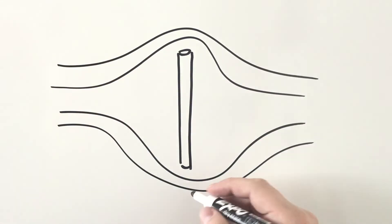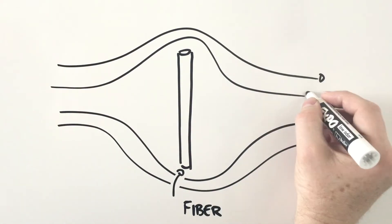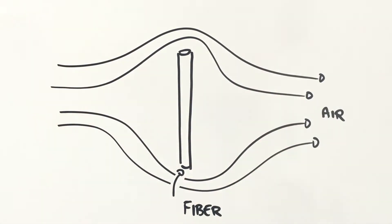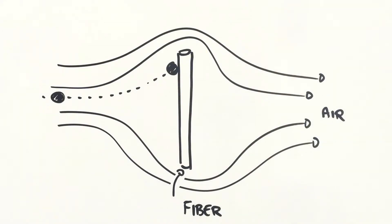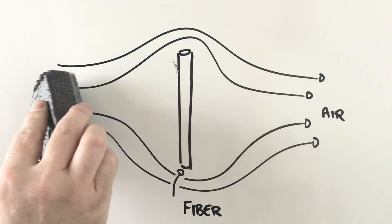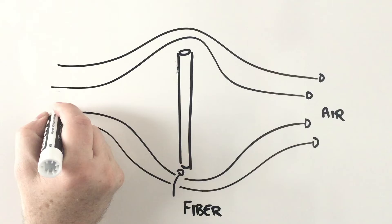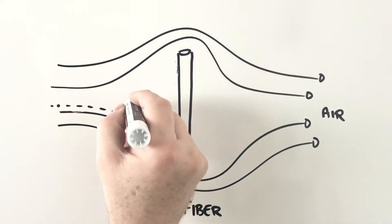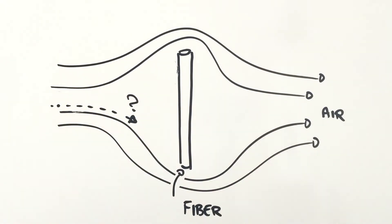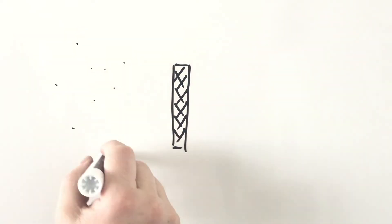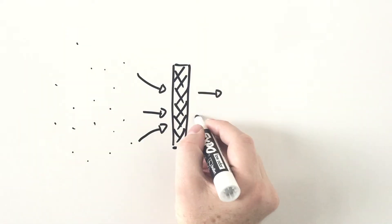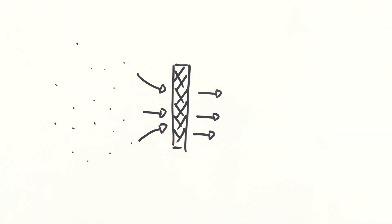Because of their inertia — which, just like the car, depends on how massive they are and how fast they're going — they can't stay the course. But what about the smallest, lightest particles, those that can easily slip along the winding path the air takes? Amazingly, these are also captured efficiently, but for a very different reason.